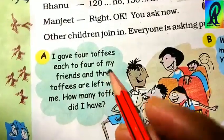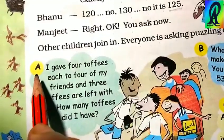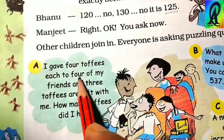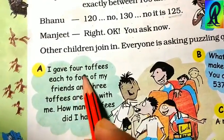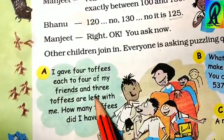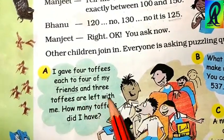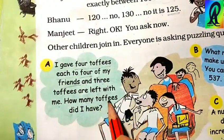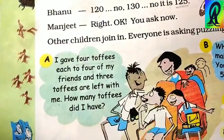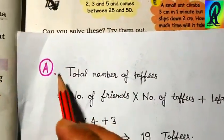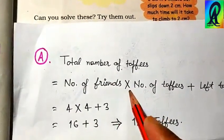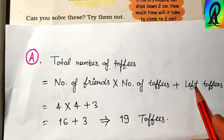Puzzle A: 'I gave four toffees each to four of my friends, and three toffees are left with me. How many toffees did I have?' Total toffees equal number of friends multiplied by number of toffees per friend, plus leftover toffees.